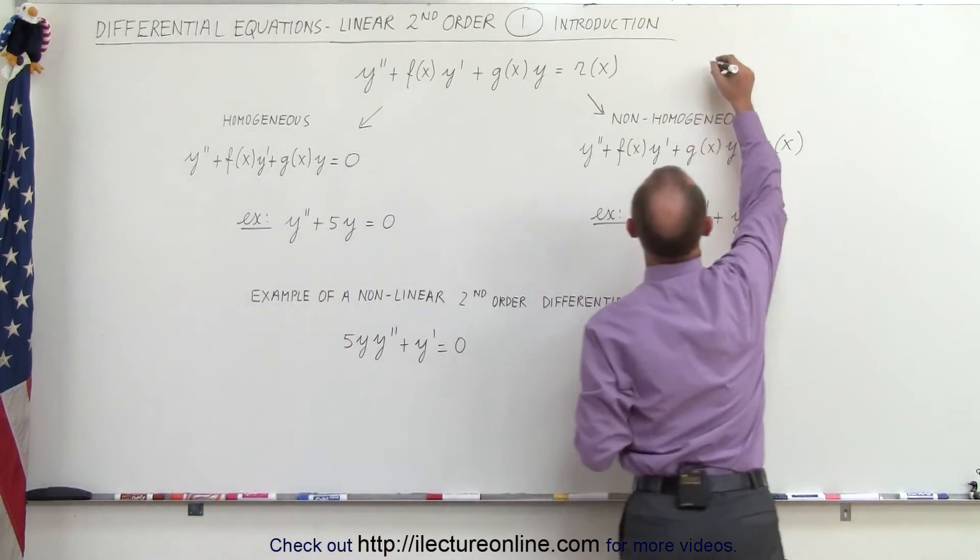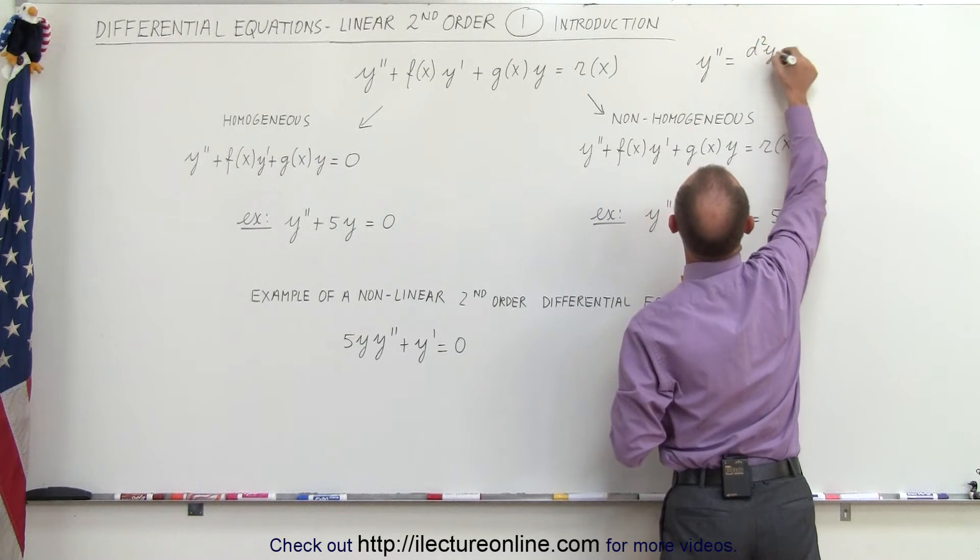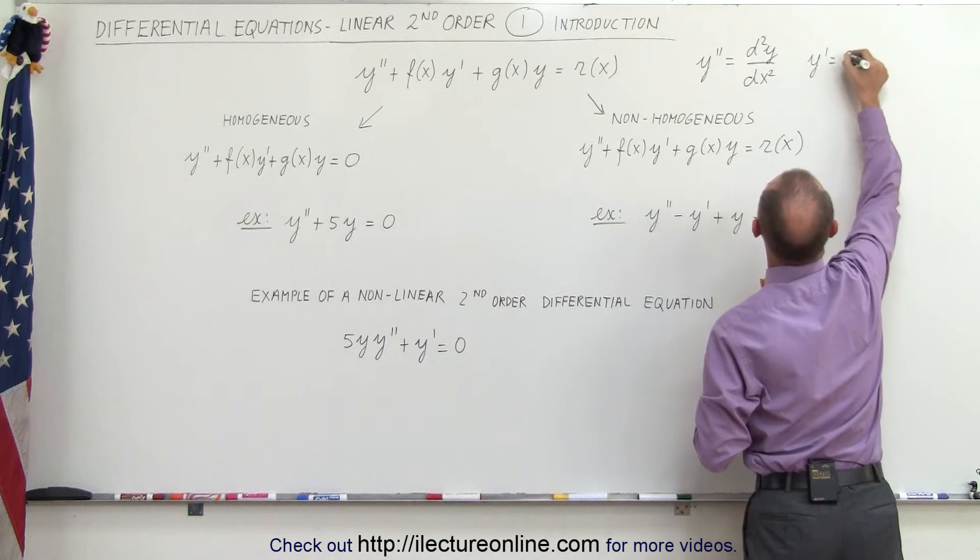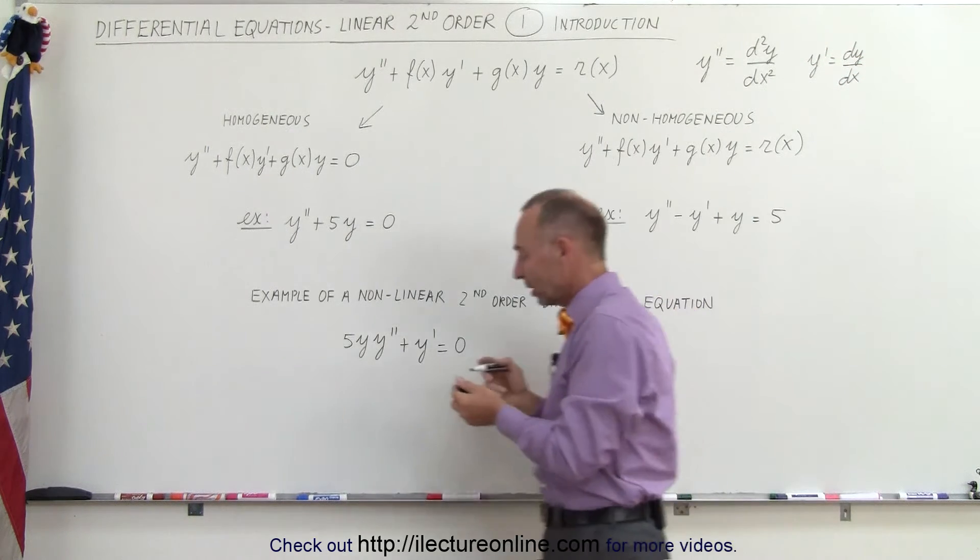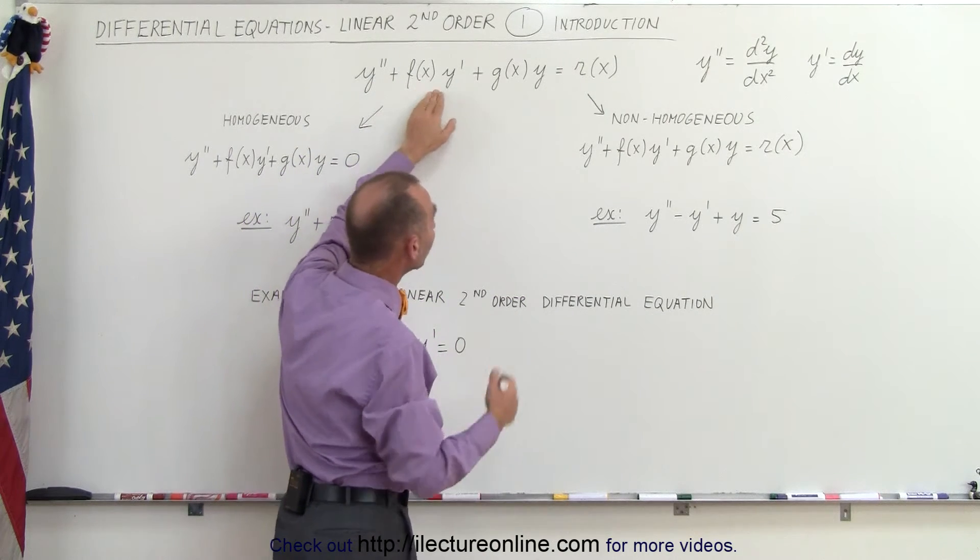So to make it easy for ourselves, y double prime is the same as the second derivative of y with respect to x. y single prime is equal to dy dx. So it's simply an equation that contains both the second derivative, the first derivative, and also the function.